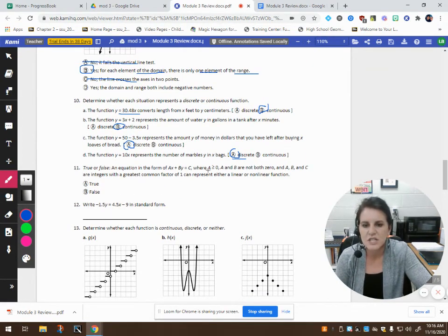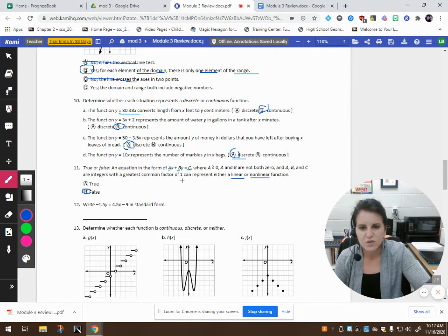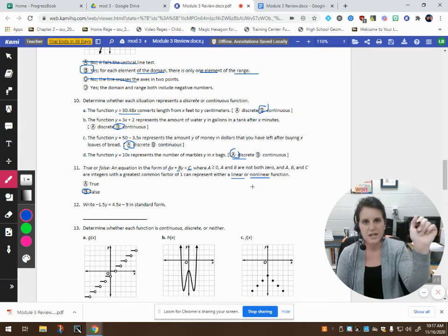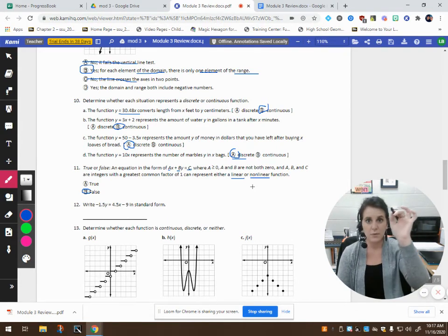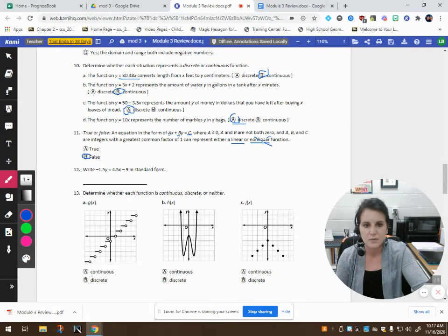Number 11. An equation in the form of Ax + By = C, where A is greater than 0 and A and B are not both 0, A, B, and C are integers with a common factor of 1 can represent either a linear or a nonlinear function. This is false. It would have to be linear because they're talking about the values of A, B, and C. They all have a greatest common factor of 1 and they're not 0. So, it has to be a linear function. It has to be a line. It could be a horizontal line. It could be a vertical line. It could be a positive slope, negative slope, depending on the values. But this has to be a line. So, we can't say that it could be nonlinear.